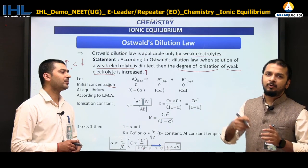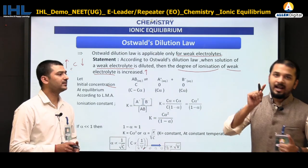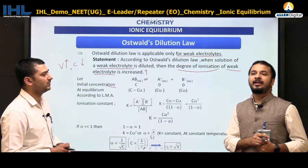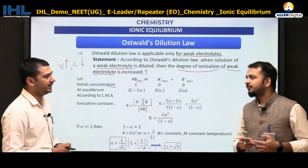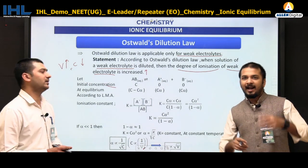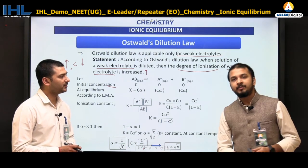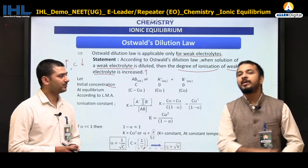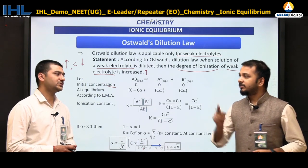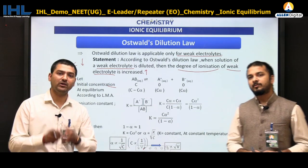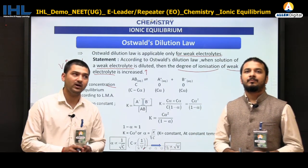If we keep on diluting — at infinite dilution — the degree of ionization will reach its maximum possible value, close to 1. That means the weak electrolyte will start behaving as a strong electrolyte. So weak and strong electrolyte can be identified on the basis of alpha.